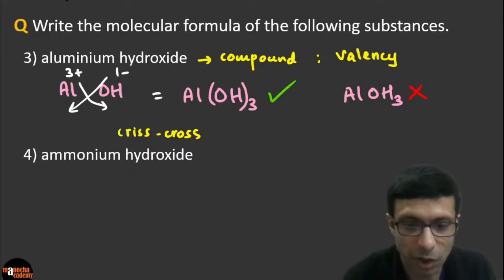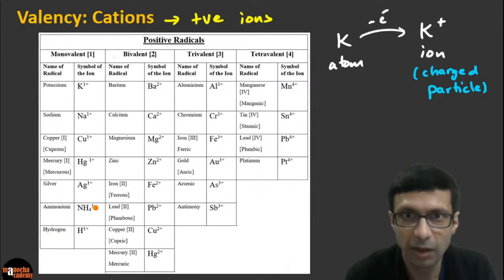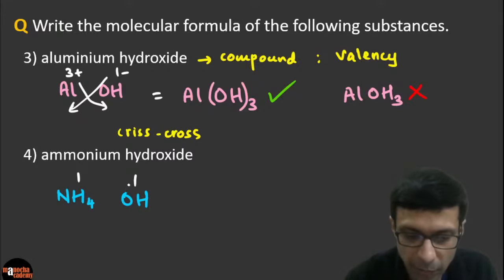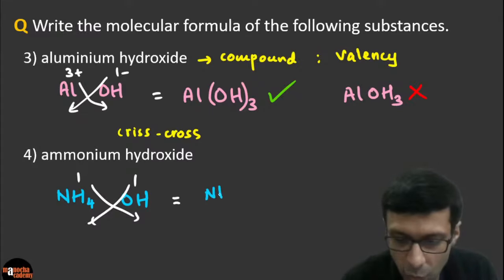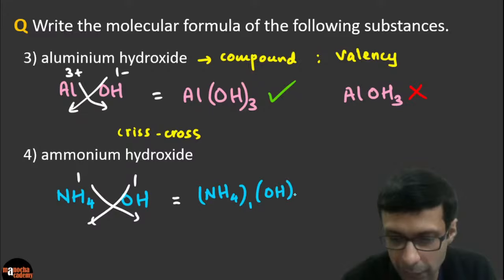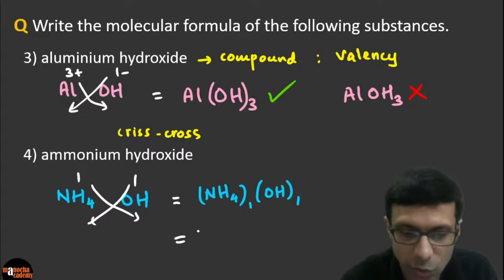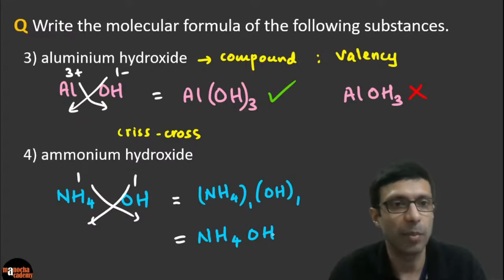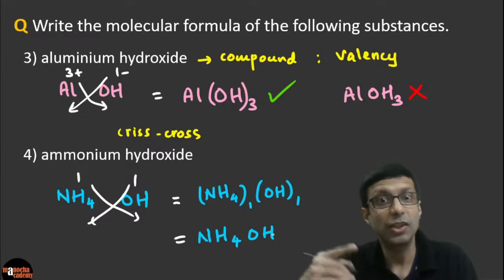Let's try ammonium hydroxide. The ammonium ion is NH₄⁺ — you need to learn this list. Ammonium is right here in the table, valency is one. Hydroxide is OH with valency one. Now do the crisscross — what do you get for ammonium hydroxide? The answer is NH₄OH. Here, because both valencies are one, the brackets go away — you don't need to write one or the bracket when the number is just one. But if it is OH three times, you need to write the brackets. The best way is to practice the formulas — don't just memorize them. Practice and understand using these simple rules.